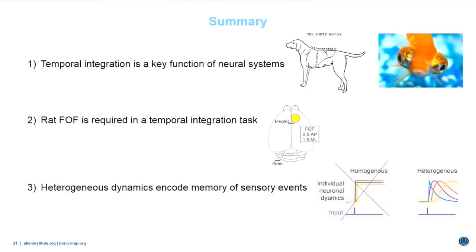To summarize the first part: temporal integration is a key function of neural systems ranging from simple reflexes in the dog, to ocular motor control in fish, to decision-making in the cerebral cortex. Rat FOF is required for this temporal integration task during decision-making, and in contrast to the leading attractor model, we found that heterogeneous dynamics are responsible for encoding past sensory events.